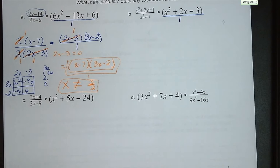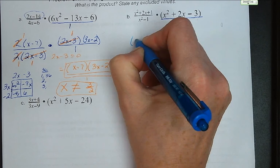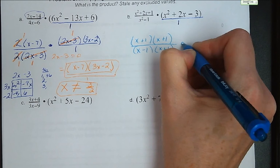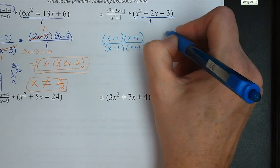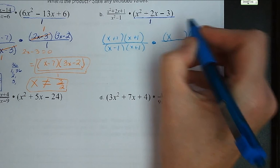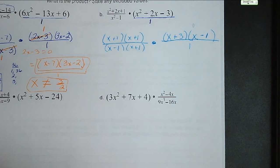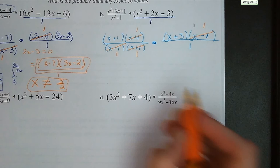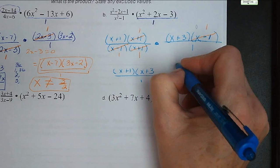Letter B: lots of factoring. We're looking for products of 1 that add up to 2 — that's just x plus 1 times x plus 1. The denominator x squared minus 1 is the difference of perfect squares: x minus 1 times x plus 1. For the polynomial, we're looking for factors of negative 3 that add up to 2 — that's x minus 1 times x plus 3, all over 1. Cancel out the x minus 1s and the x plus 1s. We're left with x plus 1 times x plus 3 over 1. x cannot equal positive or negative 1.